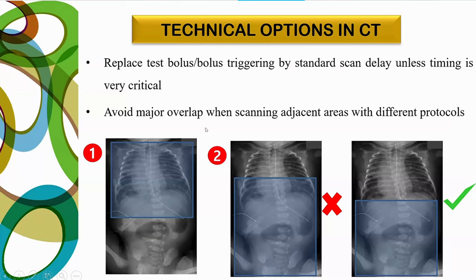Avoid major overlaps when scanning adjacent areas with different protocols. For example, when imaging both thorax and abdomen in a single study, the thorax plan may cover the upper abdomen, and the abdomen plan may start from mid-thorax — causing excess dose. Always adjust scan ranges to cover only the required area in adjacent scanning protocols, which helps reduce dose to the pediatric patient.